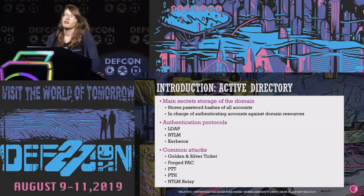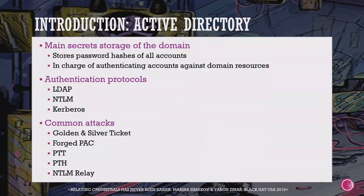Most of you are familiar with Active Directory but I'll give a brief overview just in case. Active Directory is the main secret storage of the domain — it stores the password hashes of all accounts and is in charge of authenticating accounts against domain resources. This can be done using three different protocols: LDAP, NTLM, or Kerberos. Today we'll focus on NTLM and the NTLM relay attack.